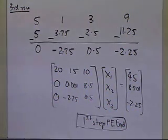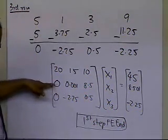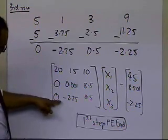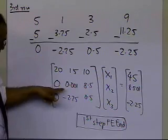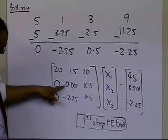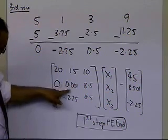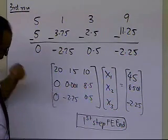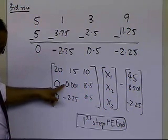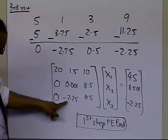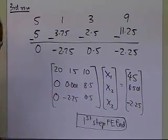We need to do the second step of formulation. At the second step of formulation, I start from the second row, second column, and look at all the elements in the second column from the second row and below. So I get 0.001 and minus 2.75. That means I have to take the absolute value of 0.001 and the absolute value of minus 2.75, see which one is greater, and based on that do the switch.